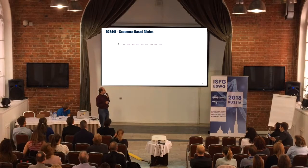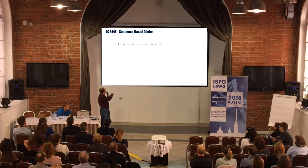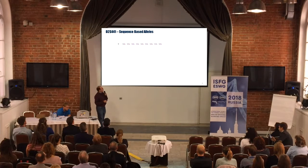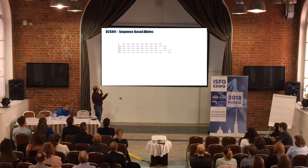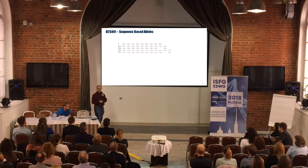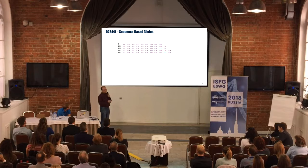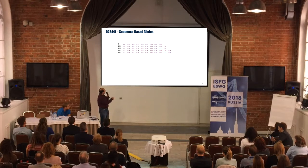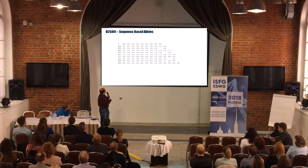And if we look at it by sequence as opposed to by size, we see that for allele 9 we do indeed have 9 TCTA repeats. But for allele 10, we have 2 different versions: one with 10 TCTAs, and one that has a TCTG. And for allele 11, we've got 2 versions, and for allele 12, we have 3 different versions.